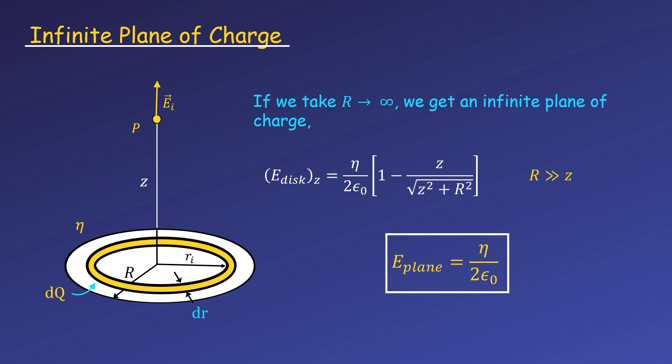This is an interesting result, because notice that there is no z dependence. That means the field strength doesn't decrease as you move away from the plane of charge, so the field is uniform or constant. This result is technically true for an infinite plane, but it is still a good approximation for the field of a finite plane or plate of charge, as long as you want the field at small distances away relative to the size of the plate.